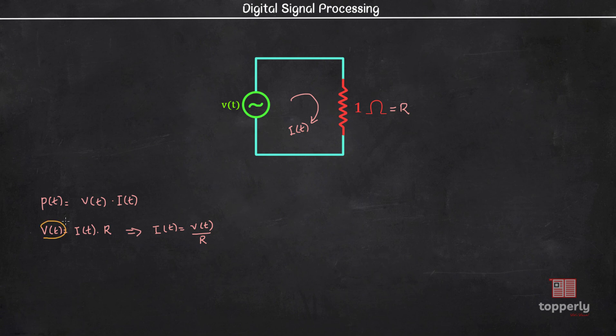Now if I substitute this value of V(t) here we get P(t) equal to I(t) squared into R. Similarly, if I substitute this value of I(t) here we get P(t) equal to V(t) squared by R. Now we know that the value of R is 1, therefore these equations become P(t) equal to I(t) squared or P(t) equal to V(t) squared, because R is equal to 1 ohm.